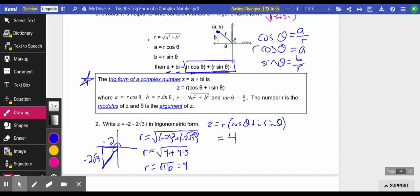Then we need to find theta. To find theta, it looks like we have opposite and adjacent. We will say that the tangent of theta is negative 2 root 3 over negative 2. The negative 2s cancel, so tangent of theta is just root 3.